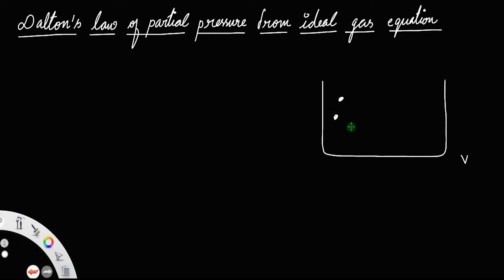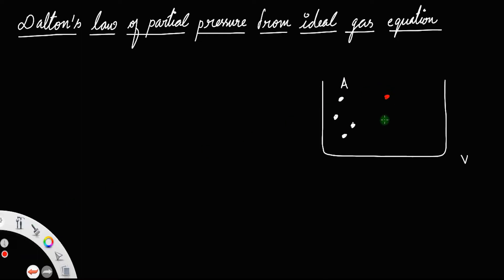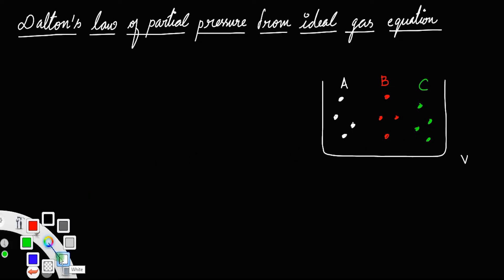Let there be a gas A, represented with white color, another gas B represented with a different color, and another gas C of green color. Each gas exerts a pressure called the partial pressure — every gas in the beaker exerts a pressure which is independent of the pressure of the other gases, and that pressure is called the partial pressure.